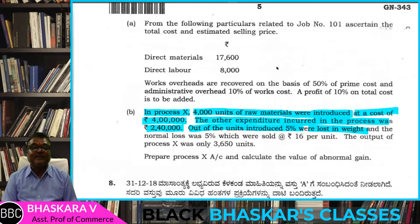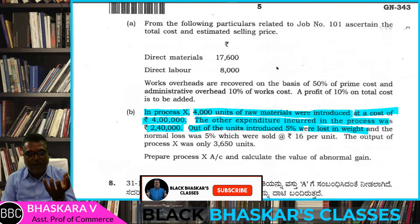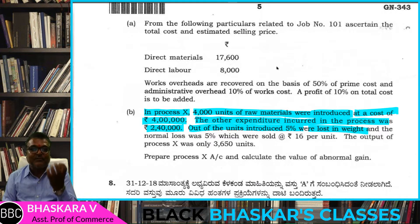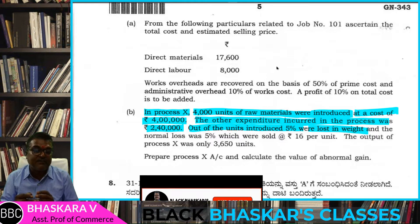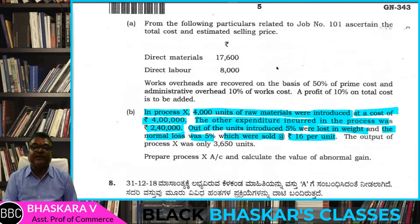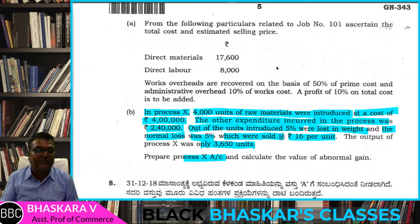Let me explain the concept of lost in weight. The normal loss was 5% which were sold at Rs. 16 per unit. The output of process X was 3,650 units. We need to prepare the process X account.